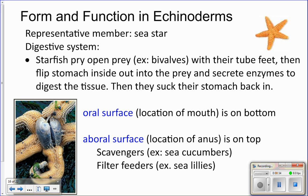Digestion: animals in Echinodermata have a complete digestive system from mouth to anus. The special way that starfish eat is by surrounding a bivalve, which is their typical prey. They use their tube feet to pry open that bivalve, then they take one of their two stomachs and flip it inside into the prey, where it secretes enzymes to digest the animal, and then they suck their stomach back in.